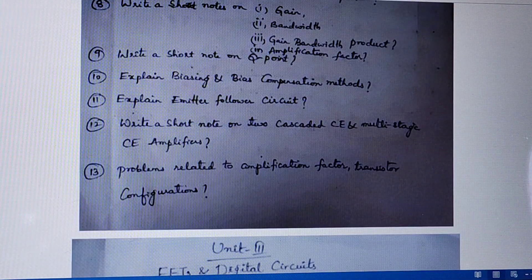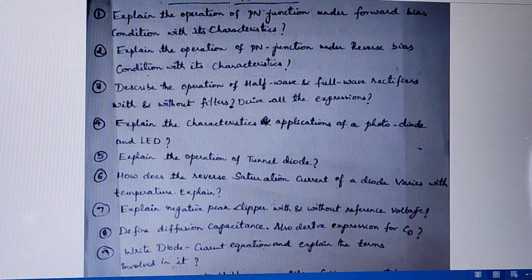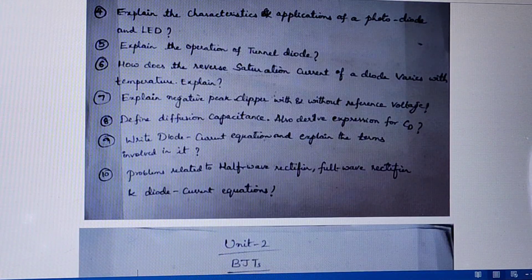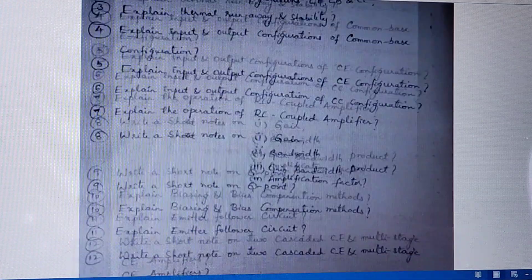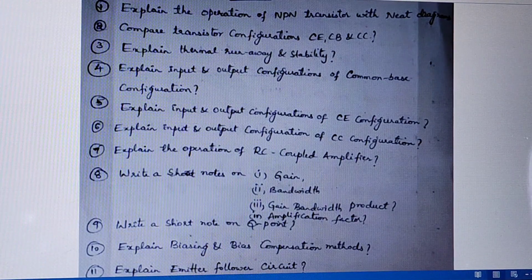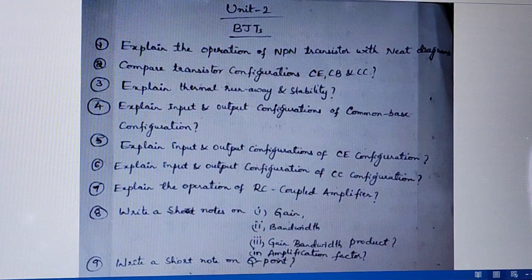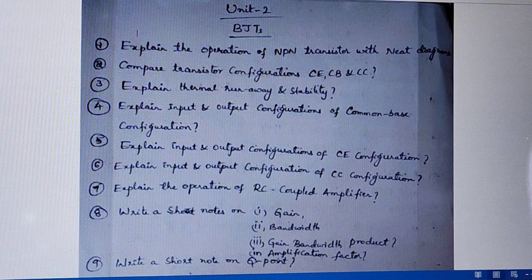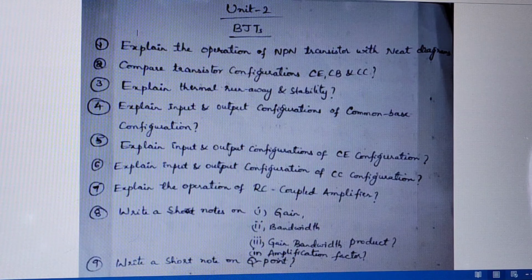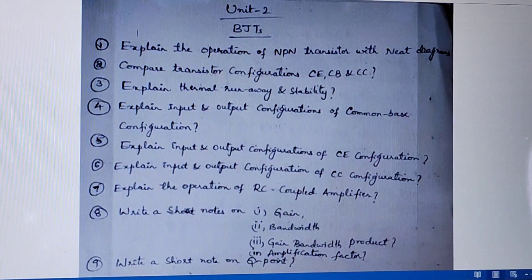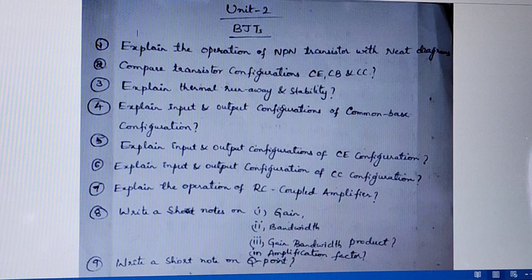Coming to unit 2, BJTs: explain the operation of NPN transistor with neat diagrams. Compare transistor configurations CE, CB, and CC. Explain thermal runaway and stability. Explain input and output configurations of common base configuration, then common emitter configuration, and then common collector configuration.